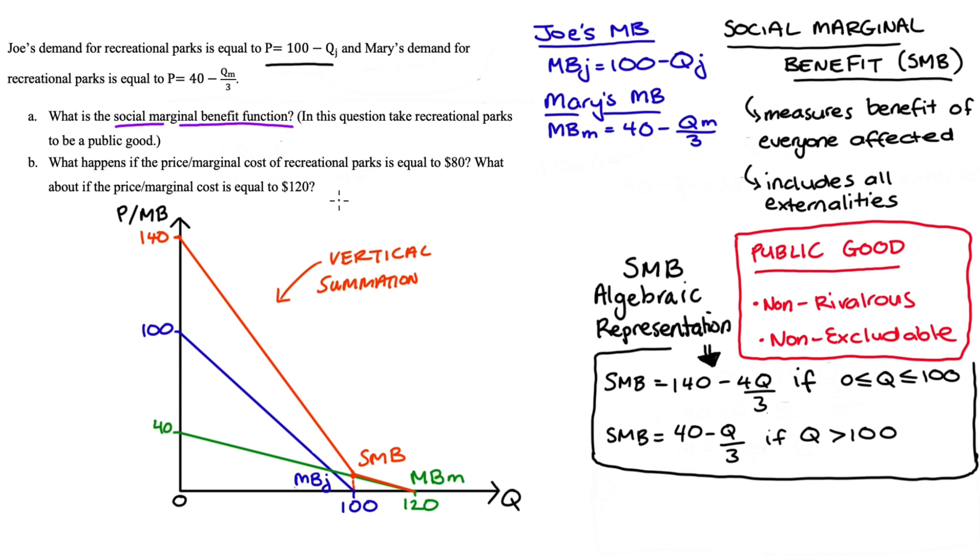And here where I've identified price and marginal cost that's just to say let's say we're in perfect competition so price is equal to marginal cost. On our diagram then just thinking about that first part where price marginal cost is $80.